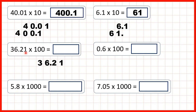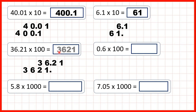Now we have 36.21, so we write the number out and copy down the decimal point. But this time we are multiplying by 100. Now multiplying by 100 is the same as multiplying by 10 and then by 10 again. So to multiply by 100 the digits move 2 squares to the left. We can copy down this 3, 2 squares to the left, and do the same with all of our other digits. That gives us 3,621, and the decimal point is on the end which means we have a whole number, so our answer is 3,621.